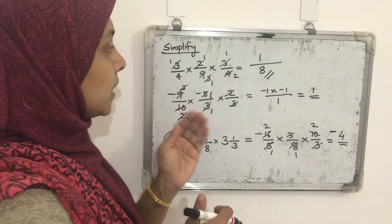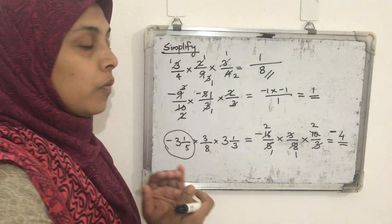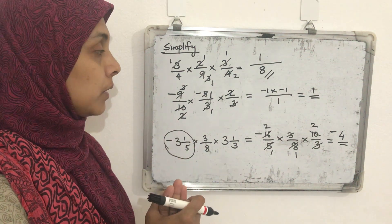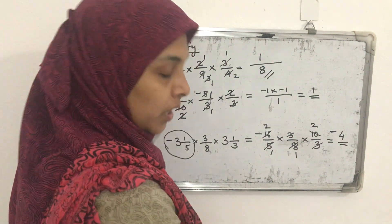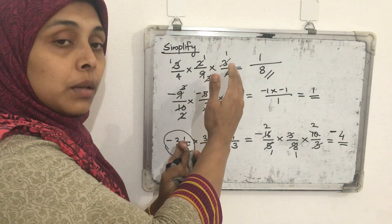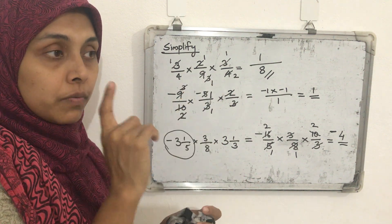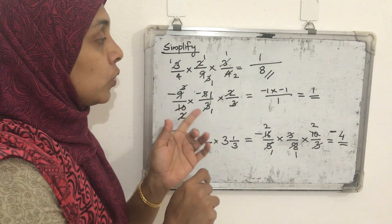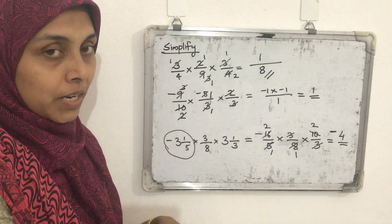This is the method for multiplication of rational numbers. If more than two rational numbers are multiplied, we can use this shortcut method. It also works for just two rational numbers. But remember: do not use this cutting method in the case of addition and subtraction.